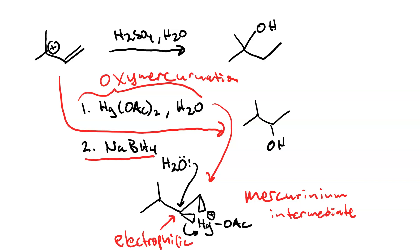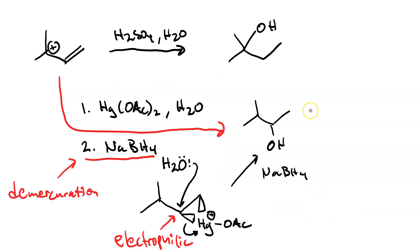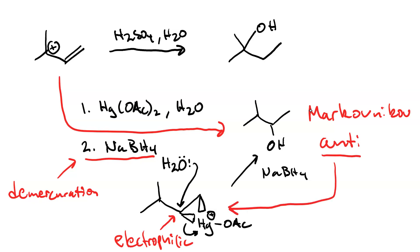Then sodium borohydride is responsible for demercuration, and you get your Markovnikov hydration product. Note that the stereochemistry is anti, which is always the case when you go through one of these cyclic three-membered intermediates.